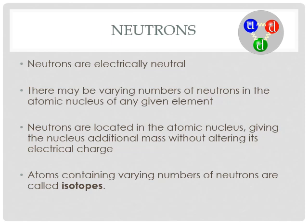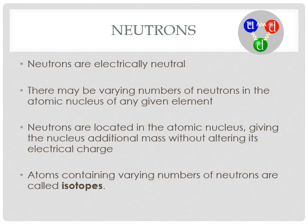If an atom has varying numbers of neutrons, it's going to be called an isotope. So varying numbers of neutrons would be one proton and one neutron, one proton and two neutrons, one proton and three neutrons — those are all different isotopes of hydrogen. Electrons each have one unit of negative charge. So we have positive with the protons, zero neutral with the neutrons, and negative with the electrons.